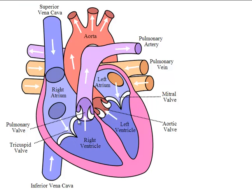When the heart contracts, the tricuspid valve closes and simultaneously the pulmonary valve opens up. The deoxygenated blood is then passed to the lungs through the pulmonary artery.